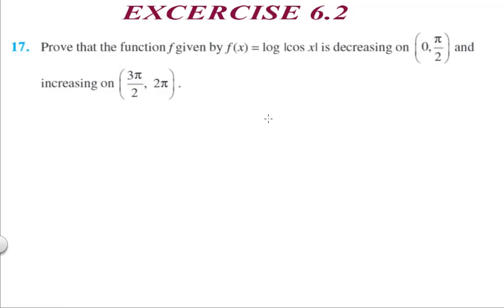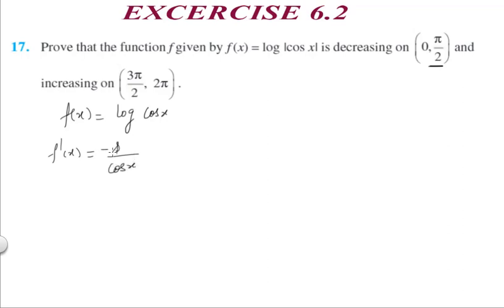Question 17: Prove that f(x) = log|cos x| is decreasing on (0, π/2) and increasing on (3π/2, 2π). In the first interval (0, π/2), cos x is positive, so f(x) = log(cos x). Differentiating: f'(x) = (1/cos x)(−sin x) = −tan x. Between 0 and π/2, sin x and cos x are both positive, so f'(x) < 0 — hence decreasing.